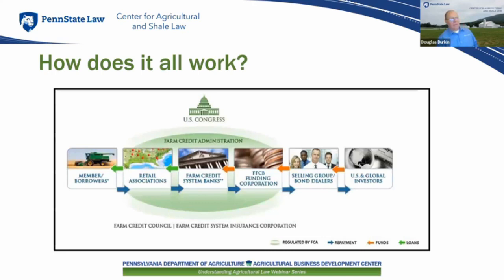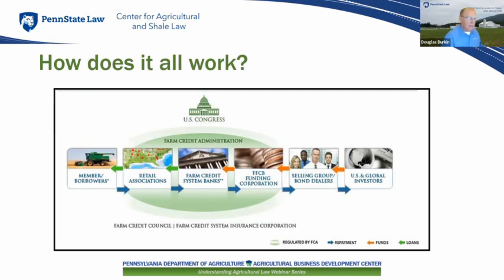How does this system work? Starting on the right-hand side of the flowchart: global and U.S. investors give their investment money to the selling groups and bond dealers, who loan that money to the Farm Credit Funding Corporation via bond sales — agricultural bond sales. The proceeds of those bonds are then loaned to the four farm credit system banks, who in turn lend that money to the individual retail associations like Horizon, who in turn lend it to the borrowers. The borrowers make their interest payments back to the association, who makes payments back to the farm credit bank, then to the funding corporation, back to the bond dealers, and ultimately back to the bond investors.